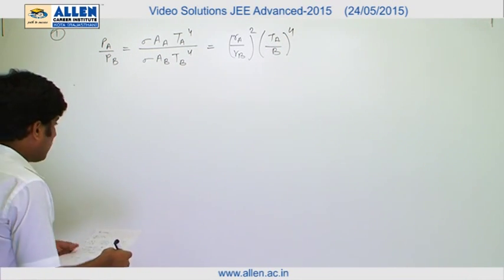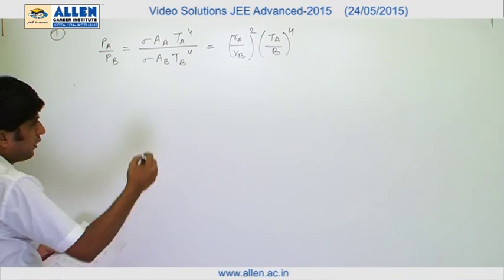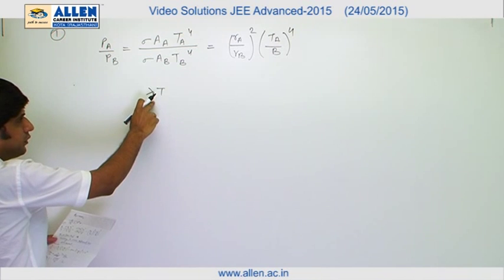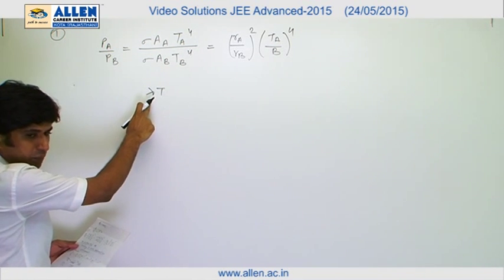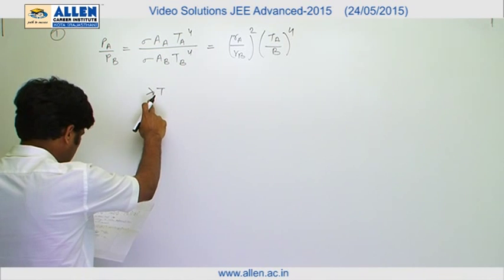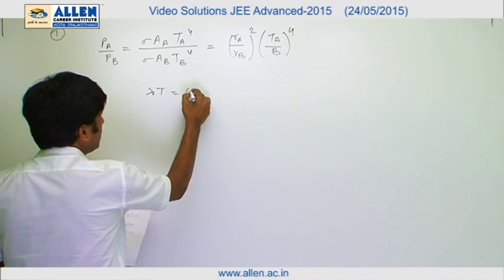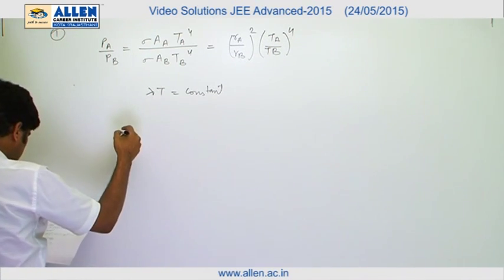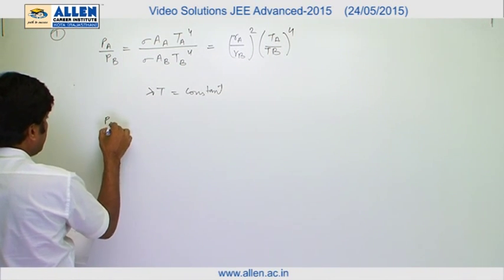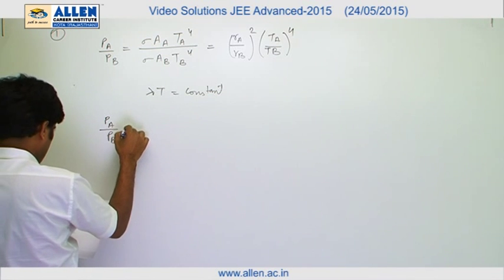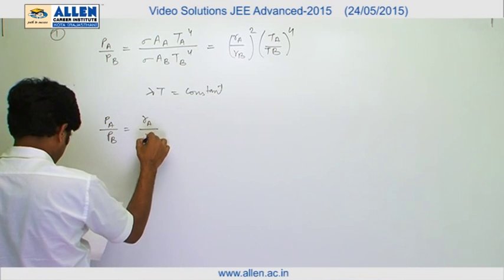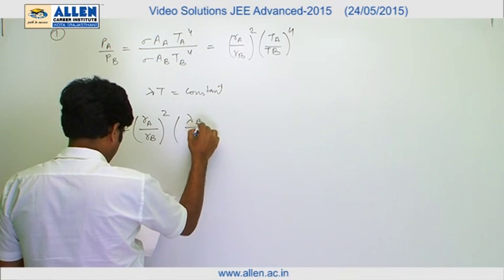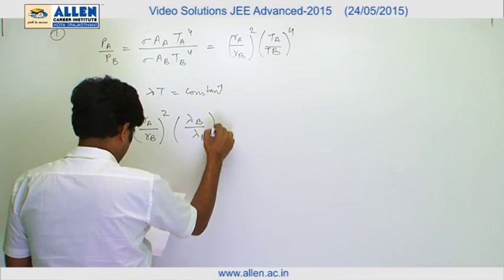As we know that according to Wien's displacement law, lambda into T, means product of lambda that is the wavelength corresponding to the maximum spectral radiancy into T, equals to constant. Here must be TB. Therefore, PA/PB equals to RA/RB whole square lambda B upon lambda A to the power 4.